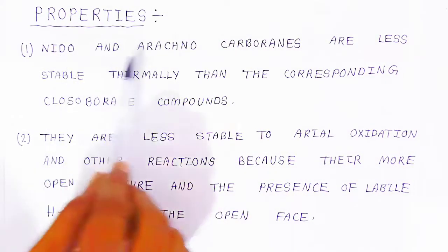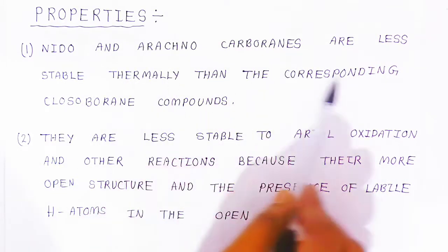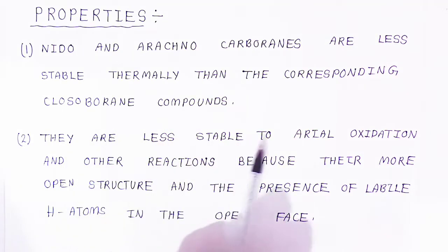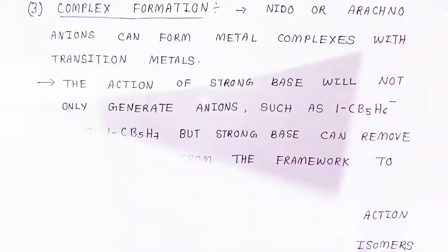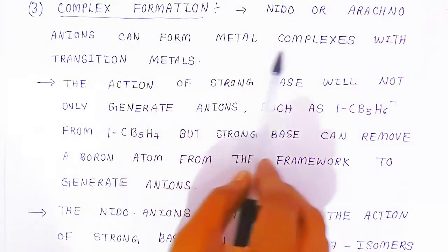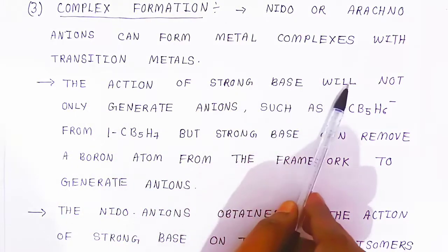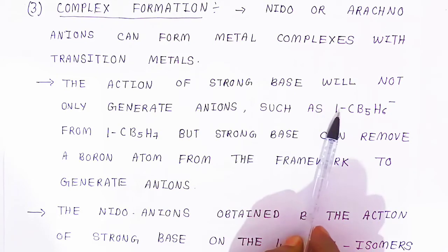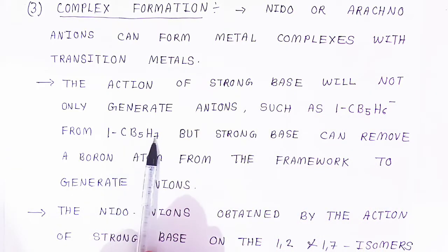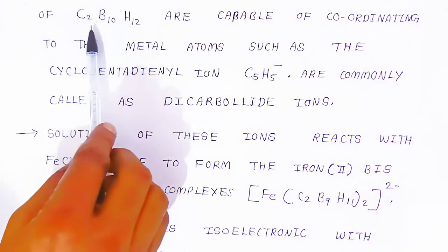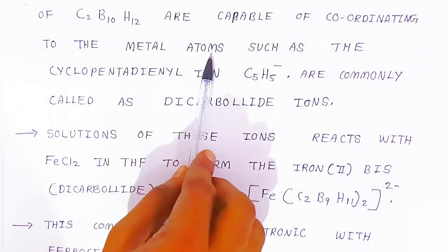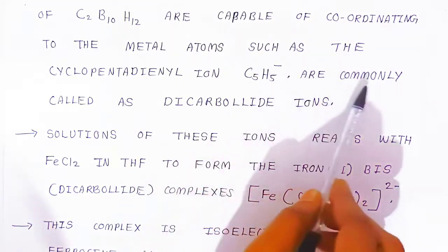Regarding properties: nido and arachno-carboboranes are less stable thermally than the corresponding closo compounds. They are less stable to aerial oxidation and other reactions because of their more open structure and the presence of labile hydrogen in the open phases. Nido and arachno anions can form metal complexes with transition metals. The action of a strong base not only generates anions such as 1-CB5H6 from 1-CB5H7, but a strong base can also remove a boron atom from the framework to generate anions. Nido anions obtained by the action of strong base on 1,2 and 1,7 isomers of C2B10H12 are capable of coordinating to metal atoms such as cyclopentadienyl ions — commonly called dicarbollide ions.